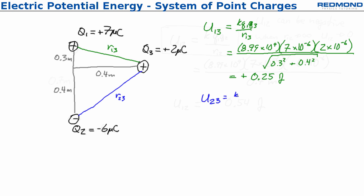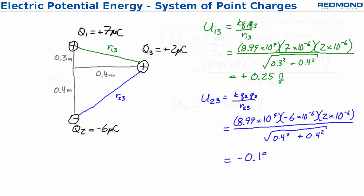When I solve for the electric potential energy between q2 and q3, I have k*q2*q3, and I can substitute in and get -0.19 joules.